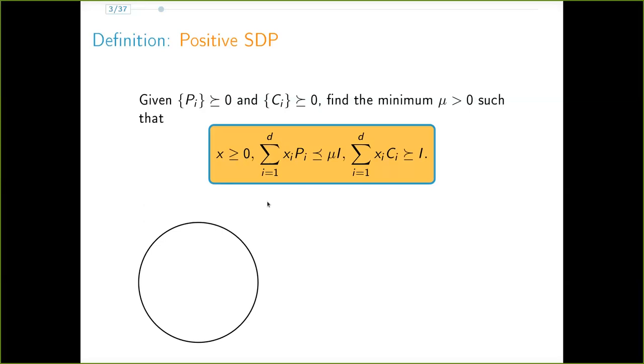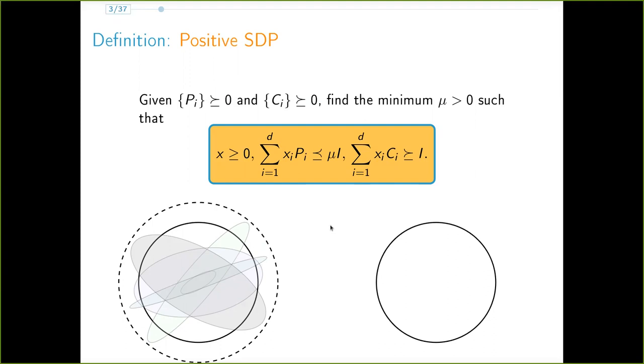If we visualize the identity matrix as a sphere, then the first constraint asks for the minimum scaling factor mu such that the scaled sum of the d ellipsoids PI can be packed inside the mu scale sphere. Similarly, the second constraint requires that the sum of these ellipsoids CI scaled by Xi covers the sphere. We call this first constraint the packing constraint and the second one the covering constraint.